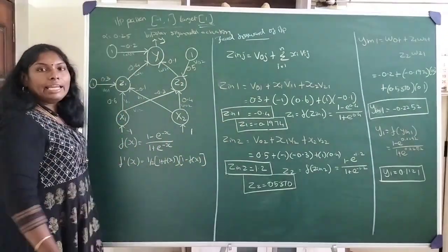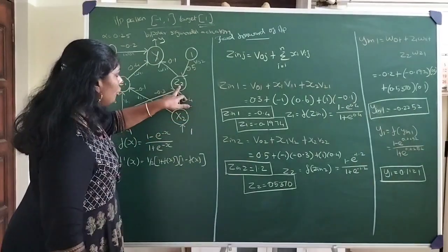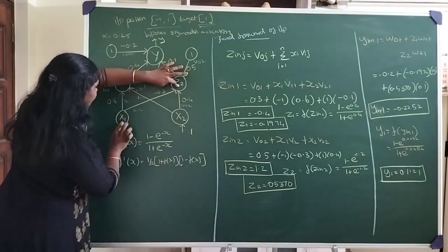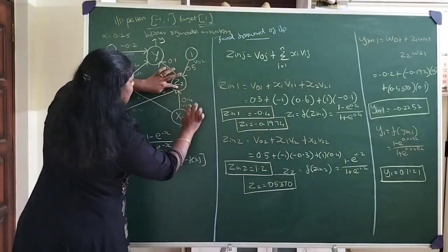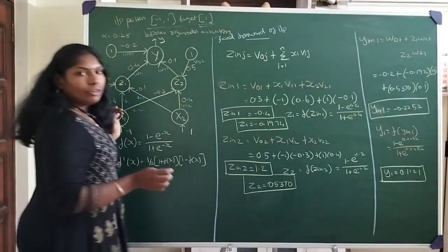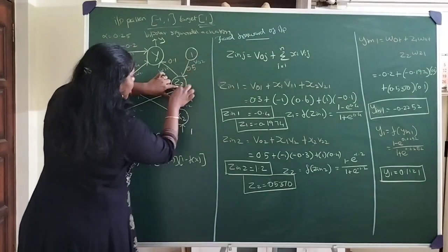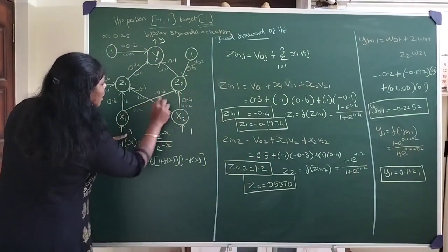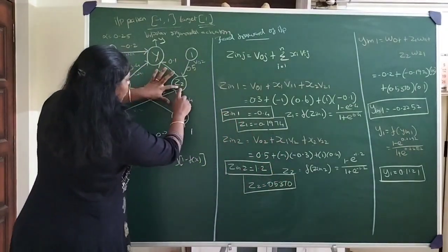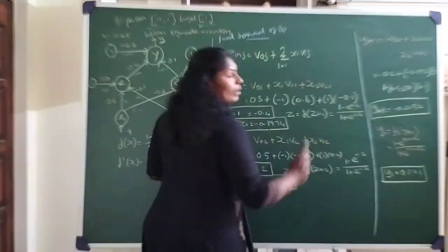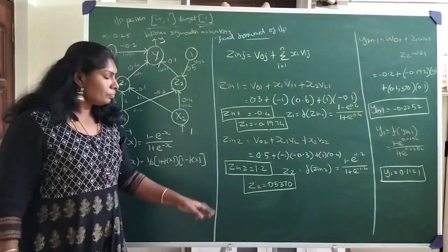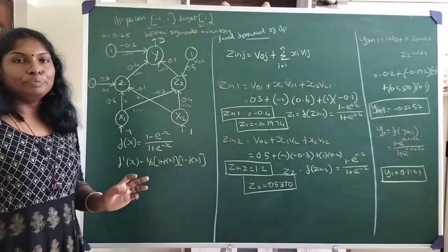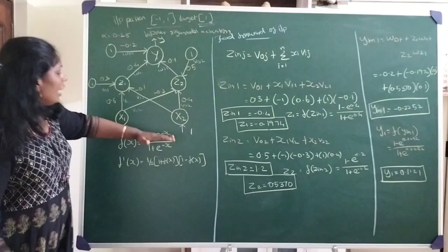Similarly, z2 receives input from the bias v02, x1*v12, and x2*v22. The summation is: 0.5 (bias) + (minus 1)*(minus 0.3) + 1*(0.4), which calculates to 1.2. After applying the activation function, the output of z2 is 0.5370.